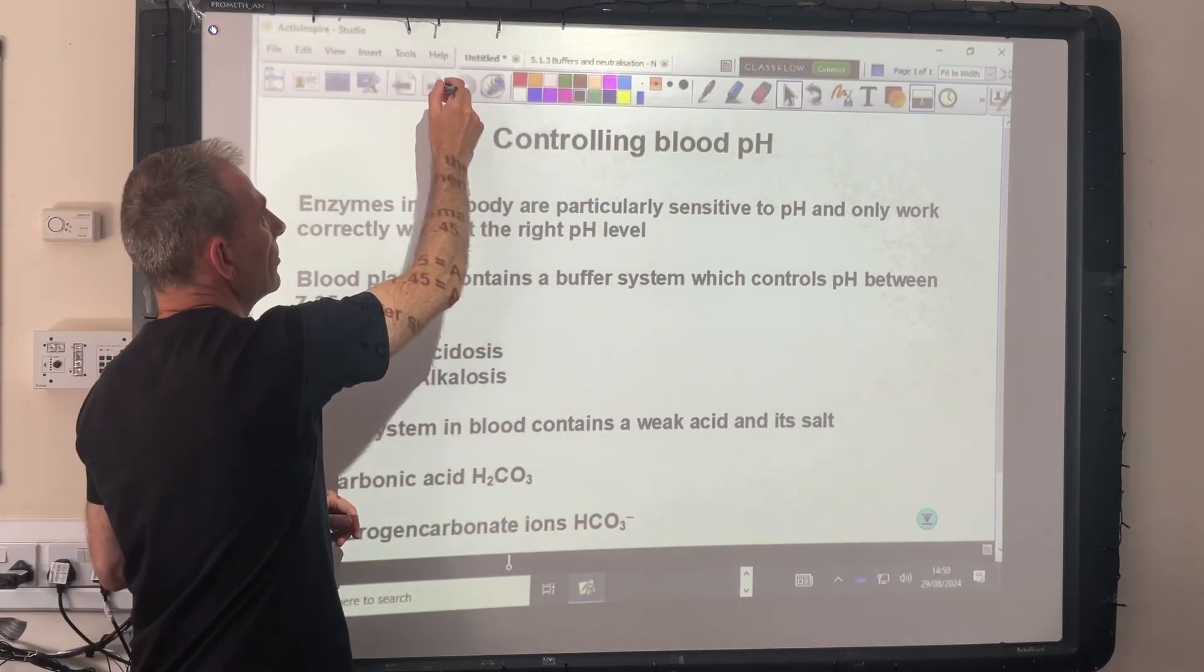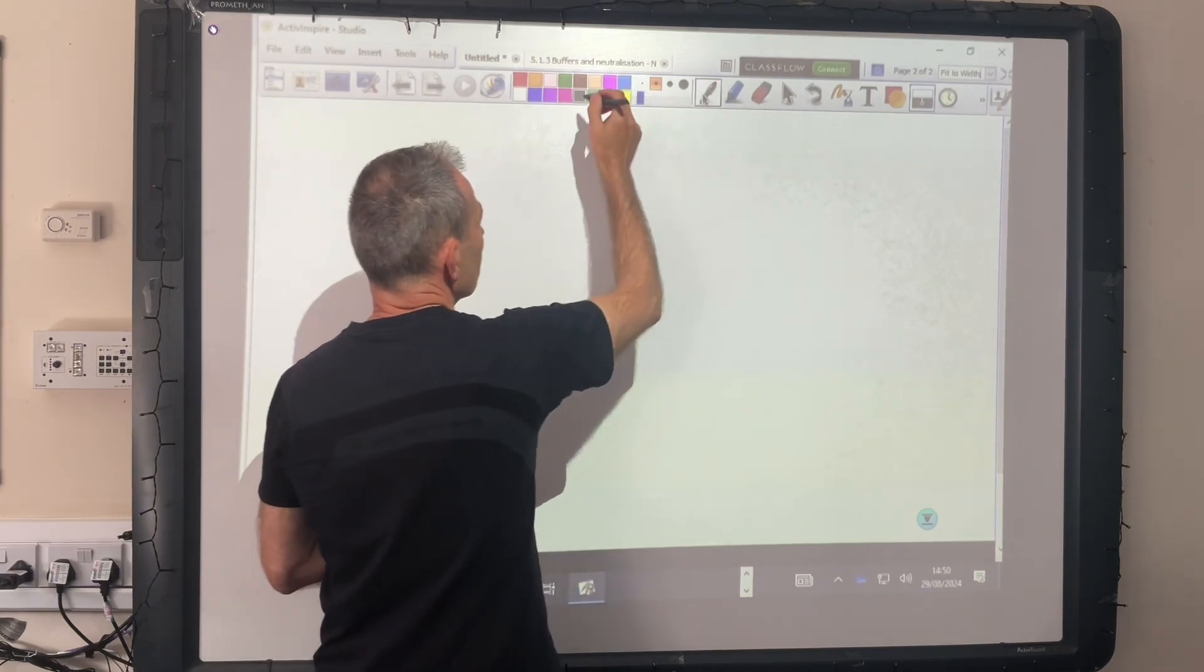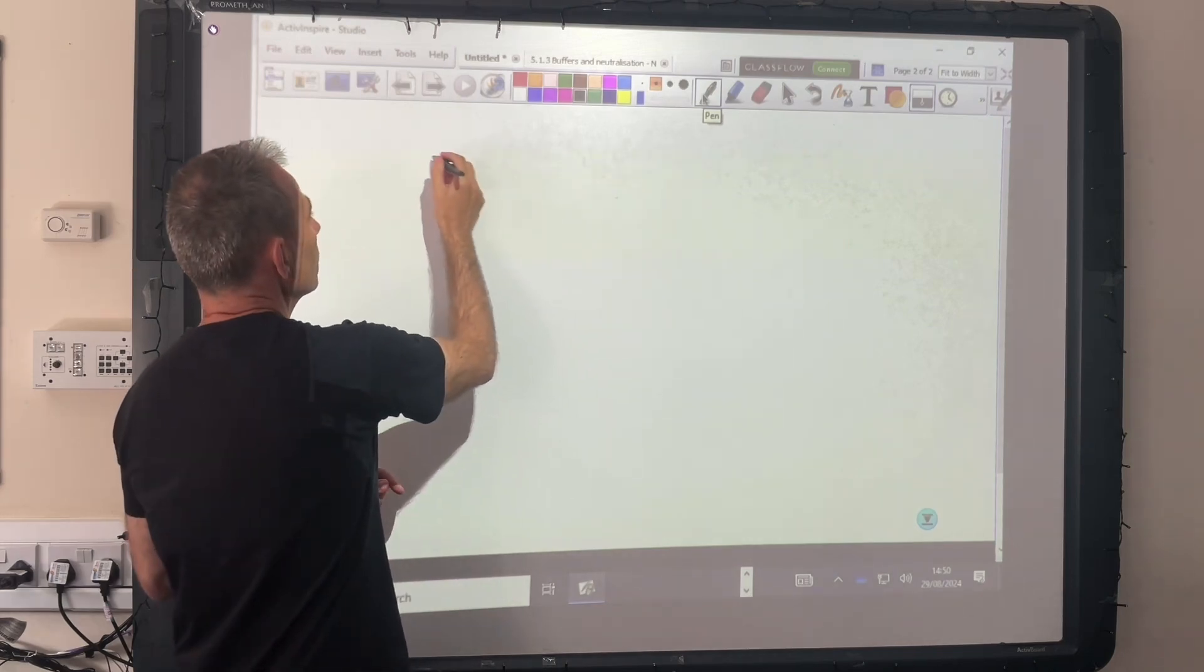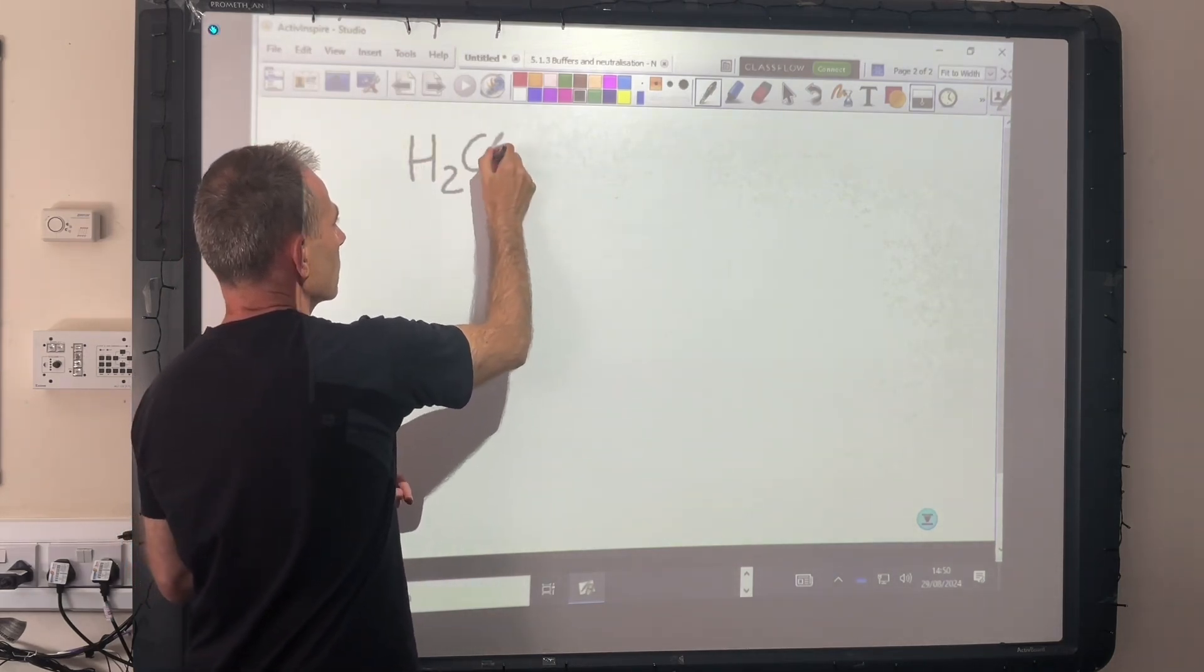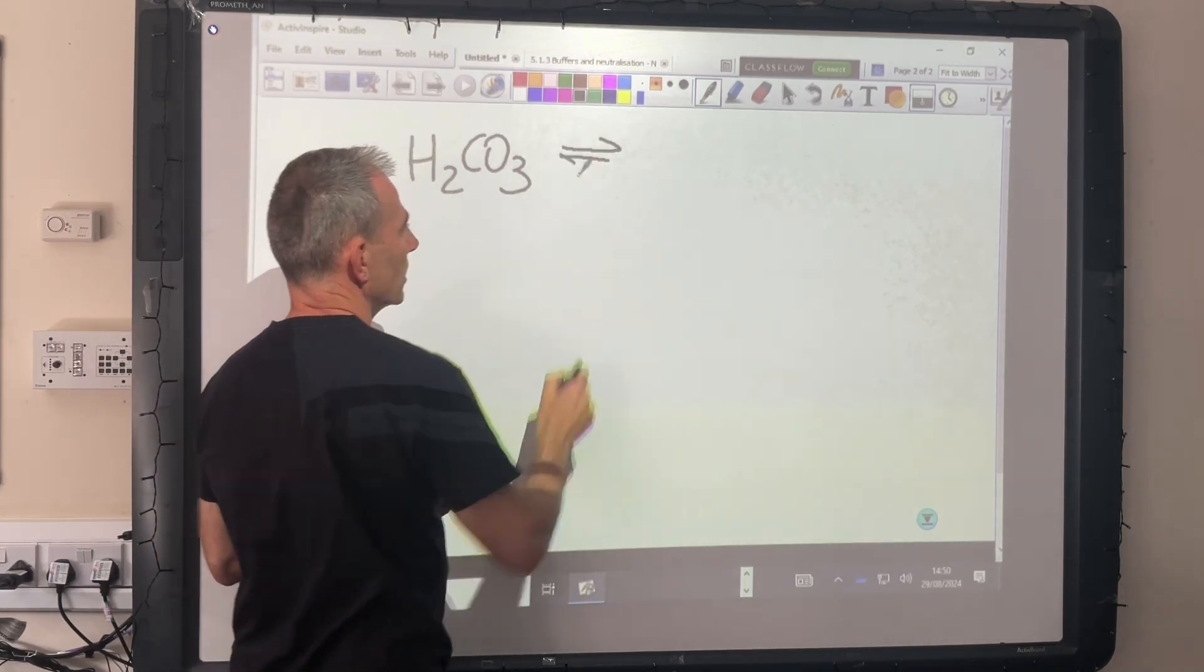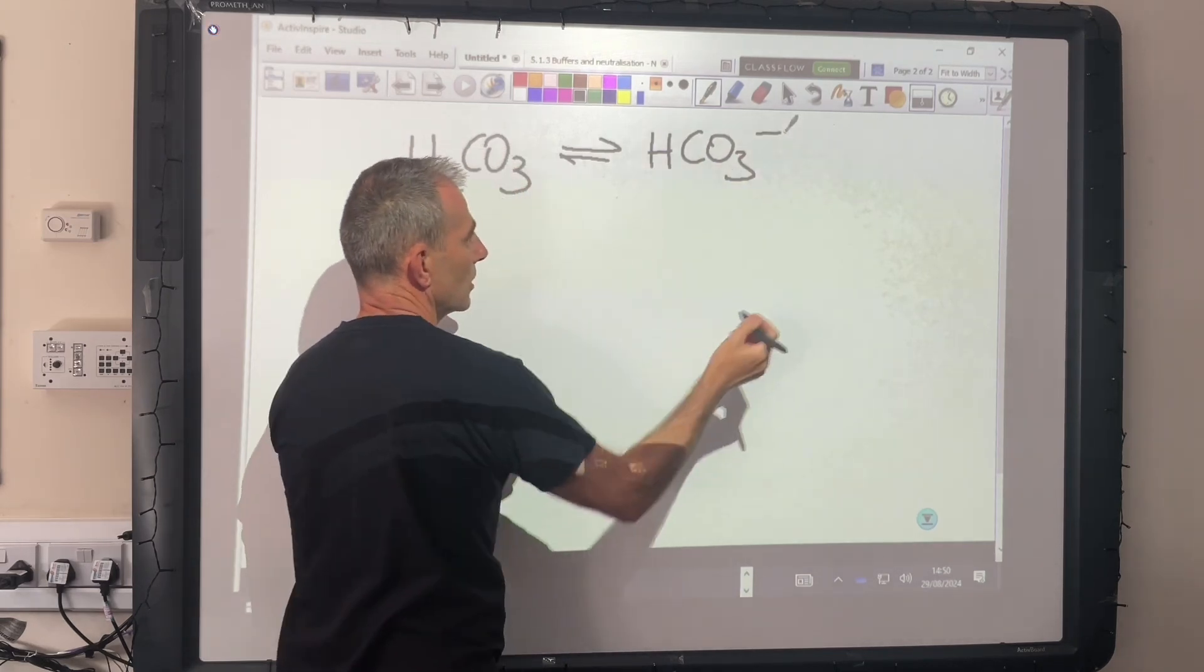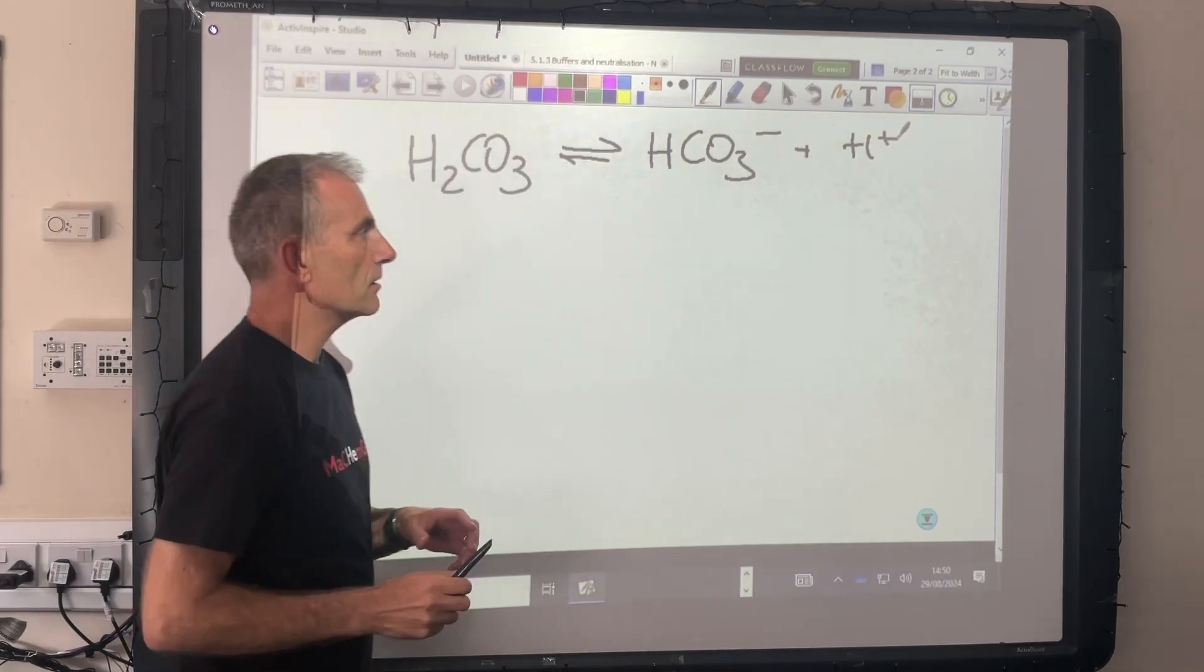So we'll move on to how the buffer works. The first thing we'll do is draw up that acid base system. We need carbonic acid, H2CO3, and that needs to be in equilibrium with that salt ion, HCO3 minus, and the H plus ion.